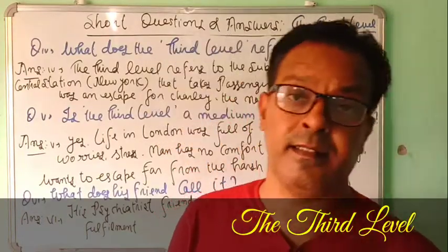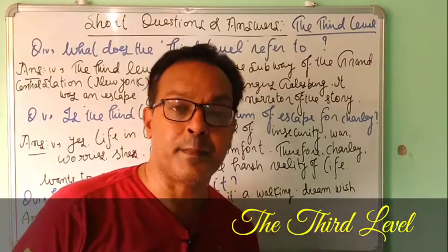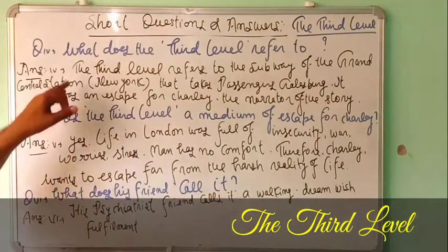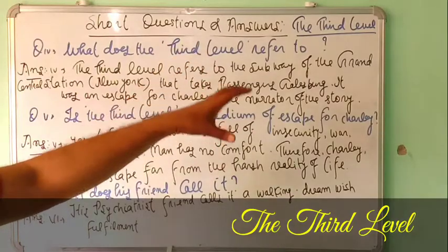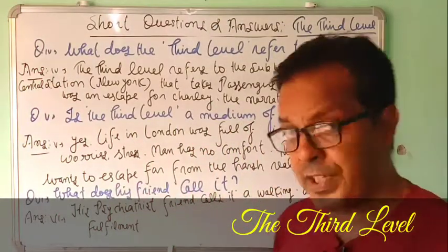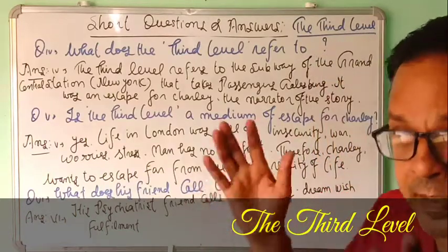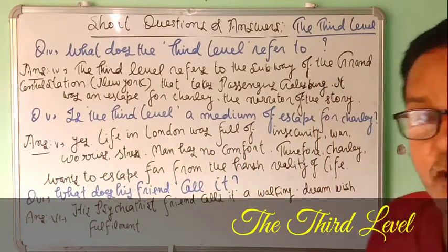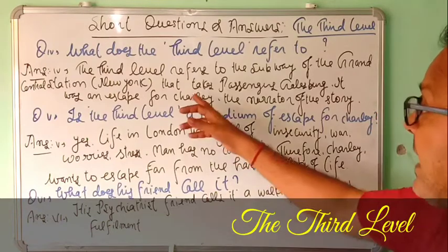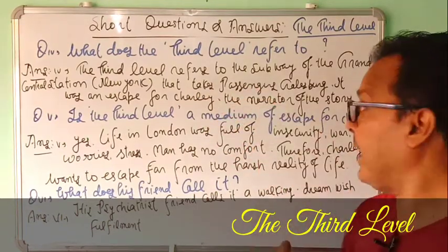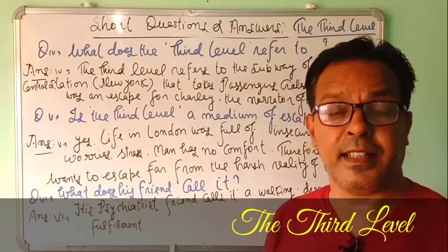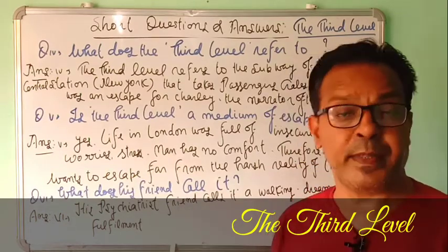Question Number Four: what does 'The Third Level' refer to? This lesson's name is 'The Third Level' — what does this refer to? So, the third level refers to the subway of Grand Central Station in New York. There is the main station, and then there is a hidden, imaginary subway — that is what the writer refers to as 'The Third Level' — which takes passengers to Galsworth.